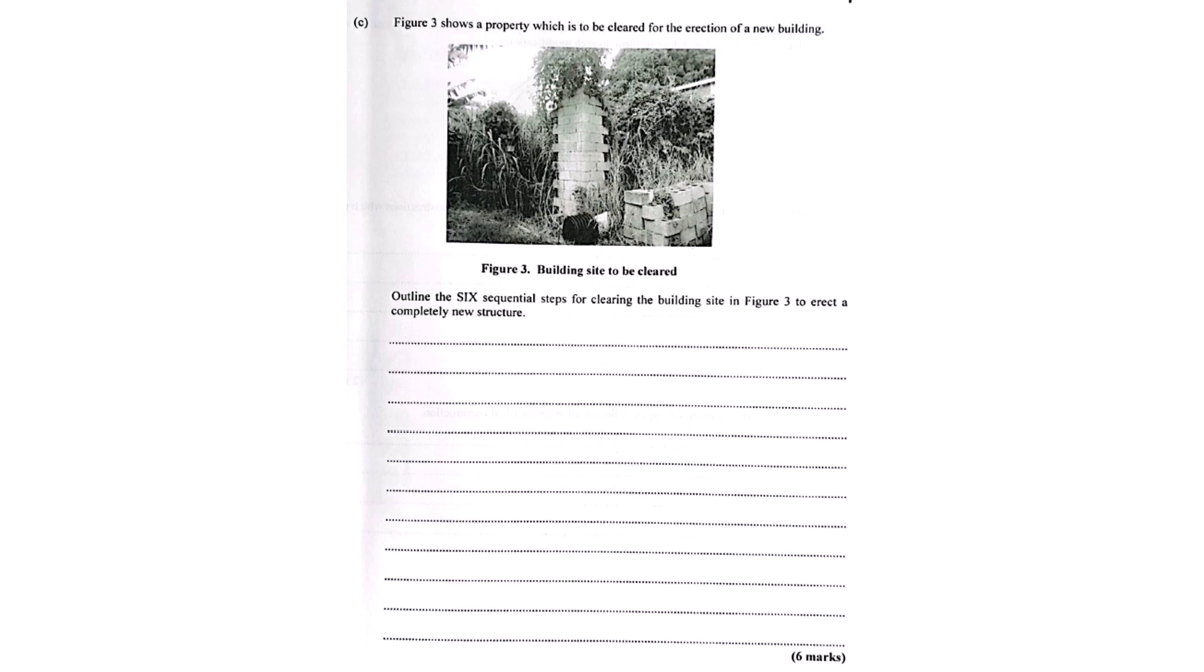Let's unpack that canvas prep. Starting with site clearing, our source has a figure showing a typical site beforehand and it lists six key steps to get a construction site ready. Removing trees, bushes, the obvious stuff. But then it mentions grubbing out the roots. Why is that specifically so important? It's not just about looks, is it? No, not at all. Leaving roots can cause real headaches later. As they rot, they leave gaps, voids in the soil. That can mean the foundation settles unevenly.